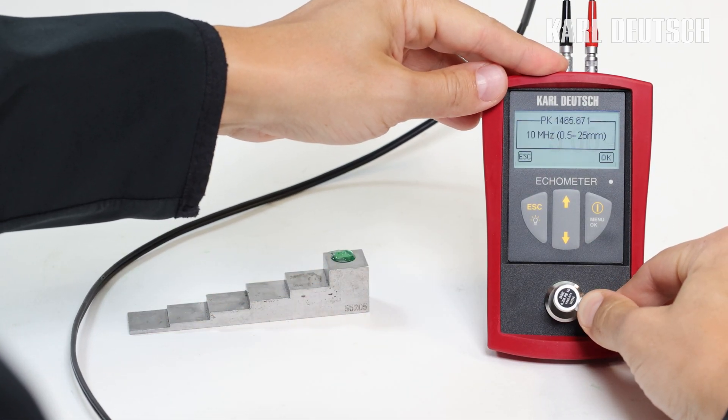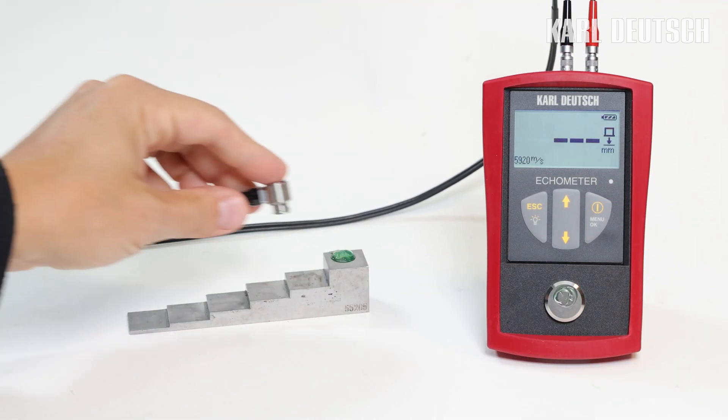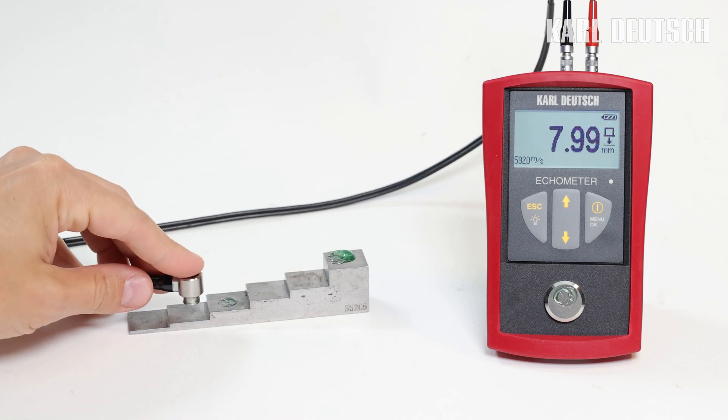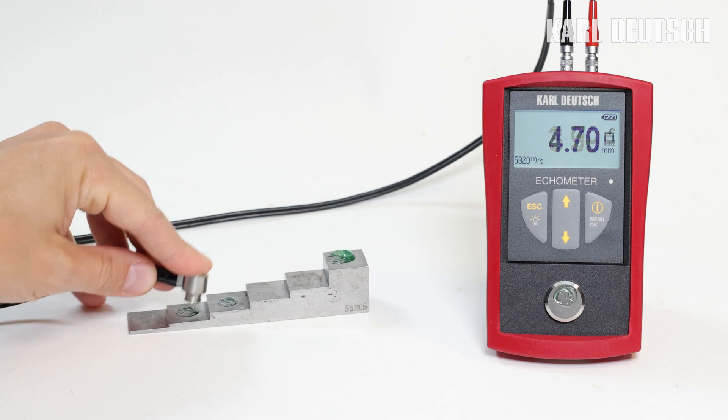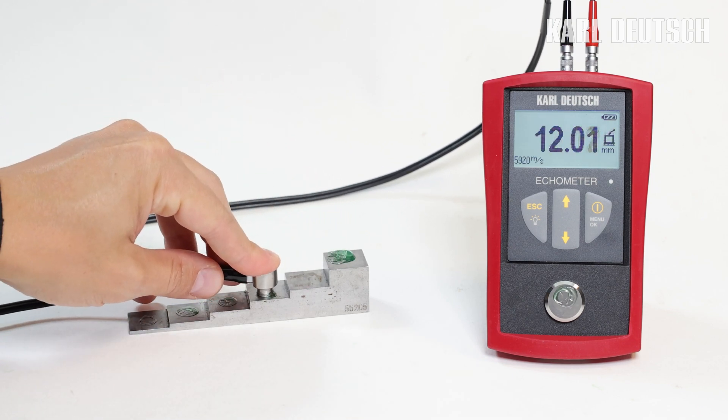The instrument is then ready for measurement on steel. For the measurement, the probe is placed on the measuring point and the gauge shows the wall thickness on the display with an accuracy of 0.01 mm. The measuring accuracy is approximately 0.1 mm.